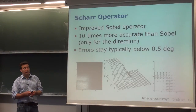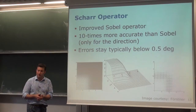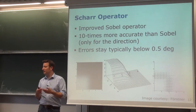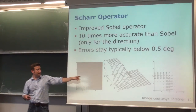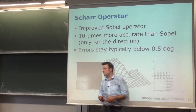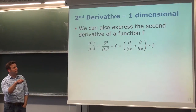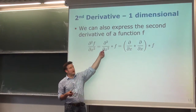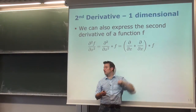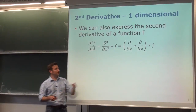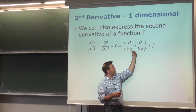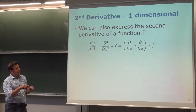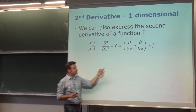If we can compute the first derivative, can we also compute the second derivative? Yes — it's simply applying the gradient operator again to the output image. In 1D, the second derivative of f can be expressed as the gradient applied twice, which can be written as a convolution of three functions, or equivalently as first convolving f with the gradient kernel and then applying the gradient again.